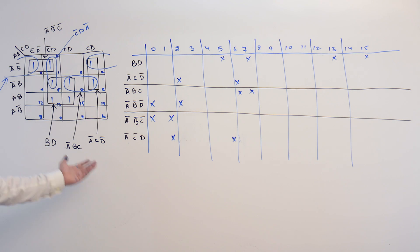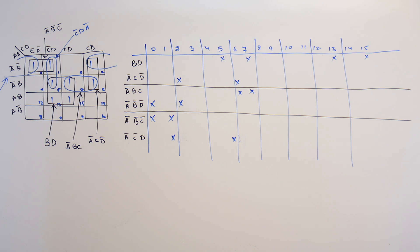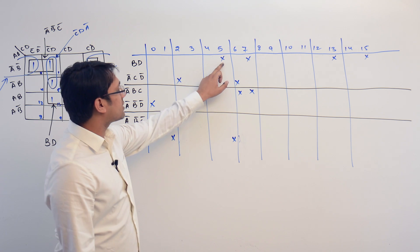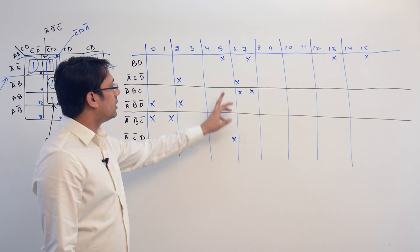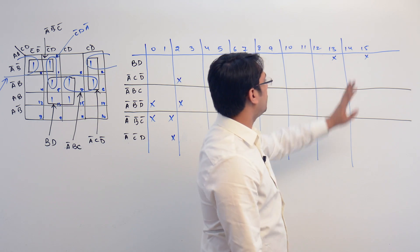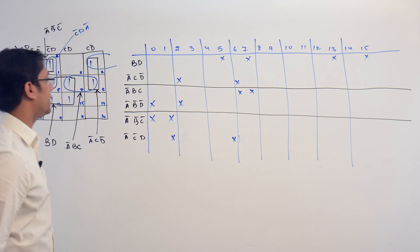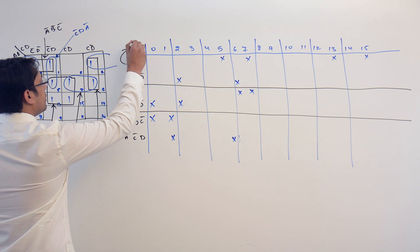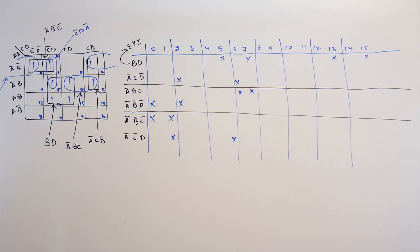Consider this K-map, which we discussed in previous videos. There are many different implicants possible in this K-map, but there is only one essential prime implicant, which is BD. BD is covering minterms 13 and 15, which are not covered by anything else. Therefore BD is an essential prime implicant and must be in the solution.